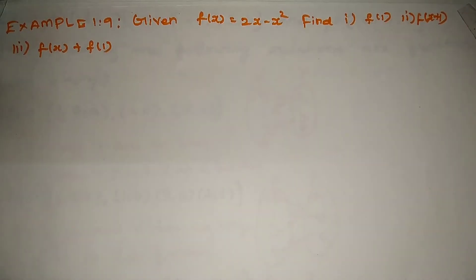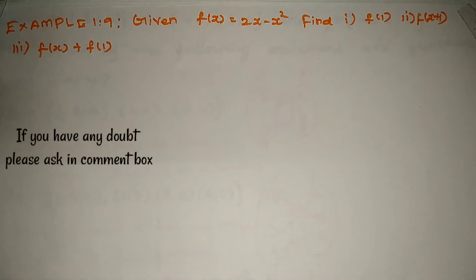Example 1.9: Given f of x is equal to 2x minus x squared, find f of 1, f of x plus 1, and the third one is f of x plus f of 1.